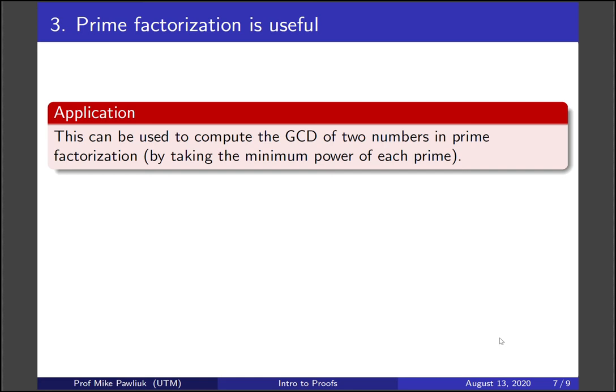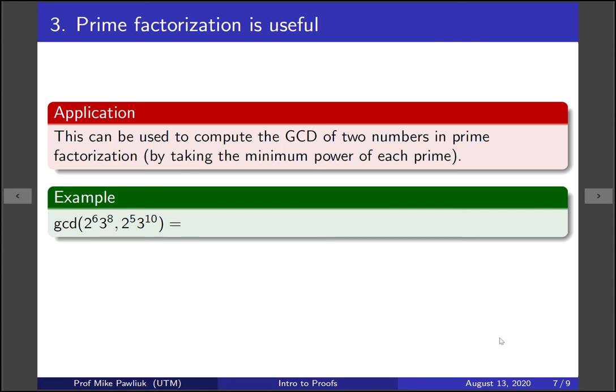Let's see an example of this. Our first term is 2 to the 6 times 3 to the 8, and the second term is 2 to the 5 times 3 to the 10. So let's find the GCD of this first by looking at the powers of 2. Well, the minimum power for the powers of 2 is 5, so the GCD will be 2 to the 5, and now we take the minimum power of the 3s, which will be 3 to the 8. So the GCD I claim is 2 to the 5 times 3 to the 8. You should check for yourself that this number really does divide both of these things.